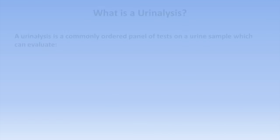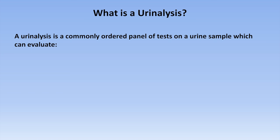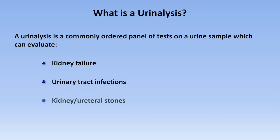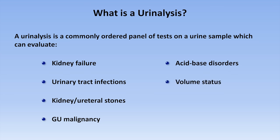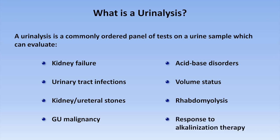First, let me start by discussing what a UA is. A urinalysis is a commonly ordered panel of tests on a sample of urine which can evaluate a wide variety of medical problems, including kidney failure, urinary tract infections, kidney and ureteral stones, GU malignancies, acid-base disorders, abnormalities of volume status, rhabdomyolysis, and response to alkalinization therapy, which can be undertaken to improve excretion of certain drugs and toxins.